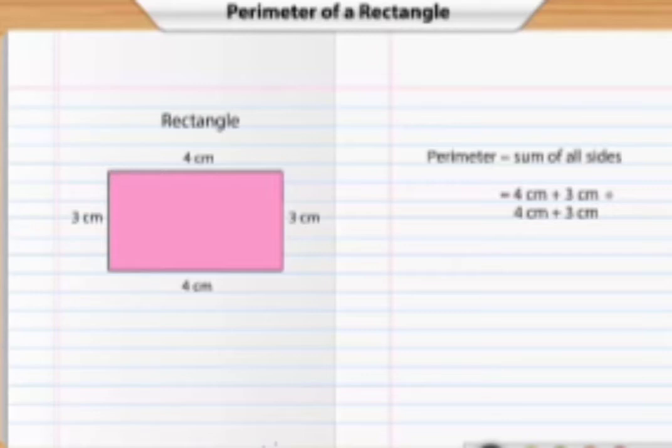We know that in a rectangle, the opposite sides are of equal length. Look, the measures 4 cm and 3 cm appear twice. So we can say that the perimeter of a rectangle is given by twice the sum of its adjacent sides.